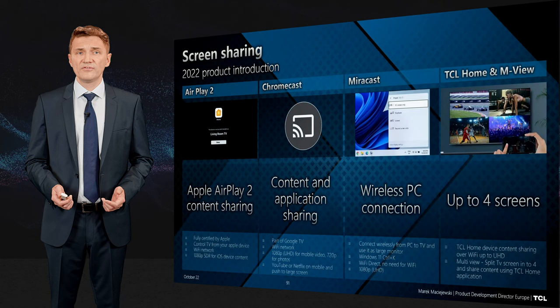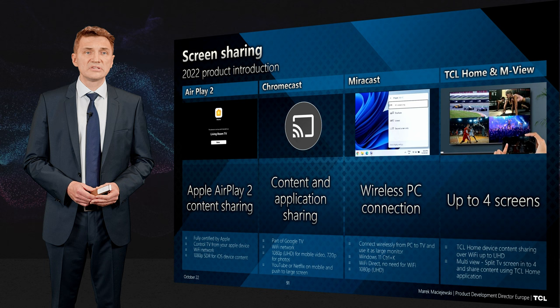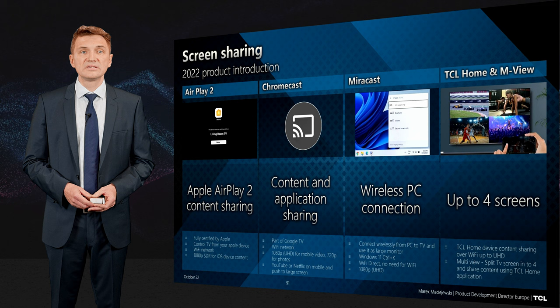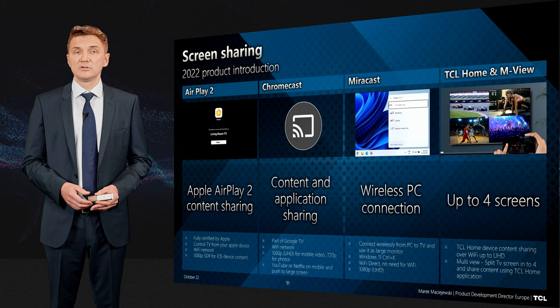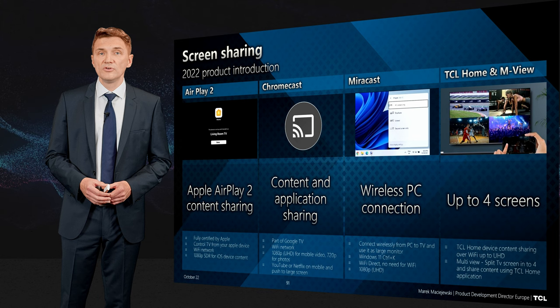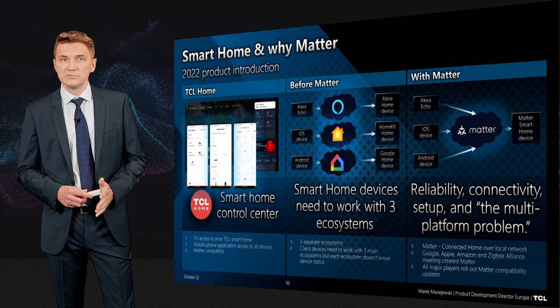Beyond streaming, you also have a lot of local content on your devices. This year we introduce Apple AirPlay 2, and our TV sets are fully compatible with it. Chromecast is mostly supported by Android devices for sharing local content. Miracast covers Windows PCs — you can use Wi-Fi Direct to send the screen to the TV set. TCL Home and Multi-View is another functionality for sharing content from local devices.